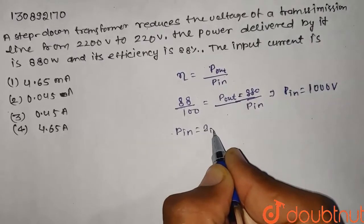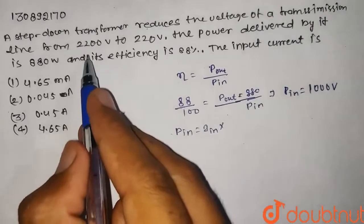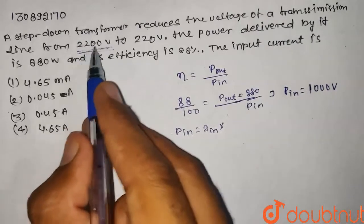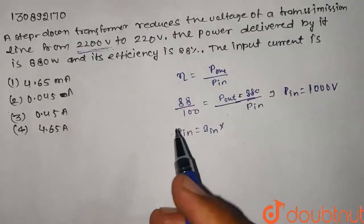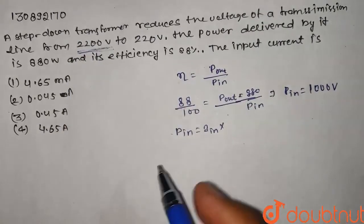What is the input voltage? For a step down transformer, the higher voltage is in the primary side, which is 2200 volts.